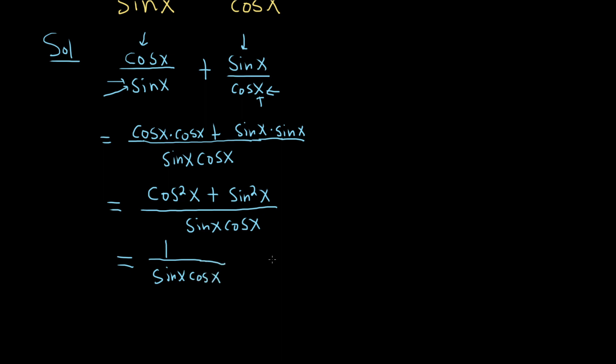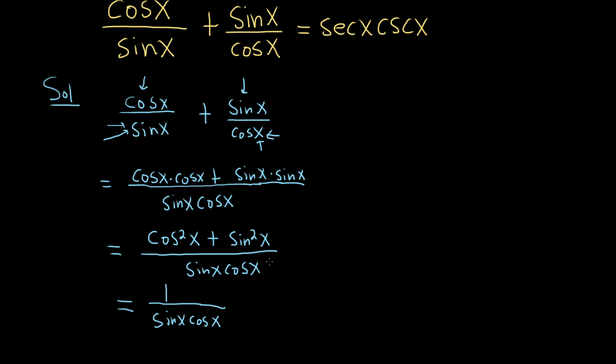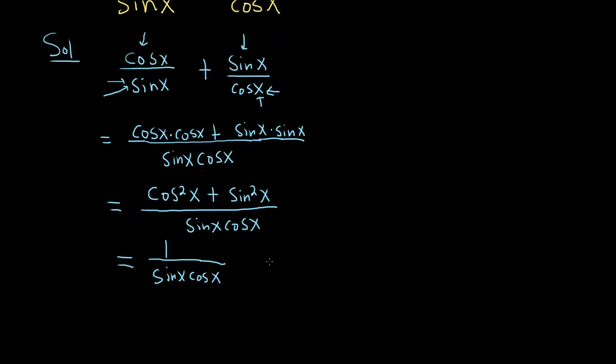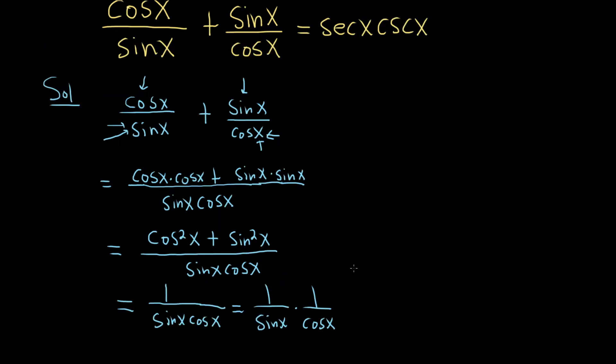Let's take a moment and see where we're trying to go. We're trying to get to secant x, cosecant x. So the natural thing to do is to write this as a product. This is 1 over sine times 1 over cosine. And I did that because we want to end up with secant times cosecant.